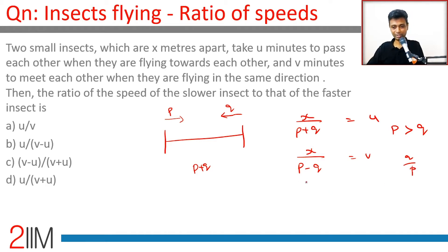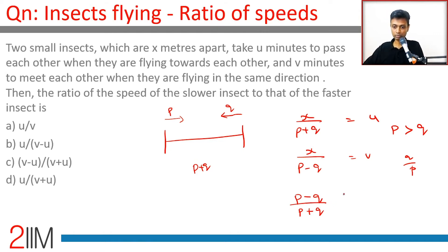Very simple — divide one equation by the other. Dividing gives us p minus q by p plus q. So x divided by p plus q equals u, and therefore p minus q by p plus q is equal to u by v. We want to find q by p.